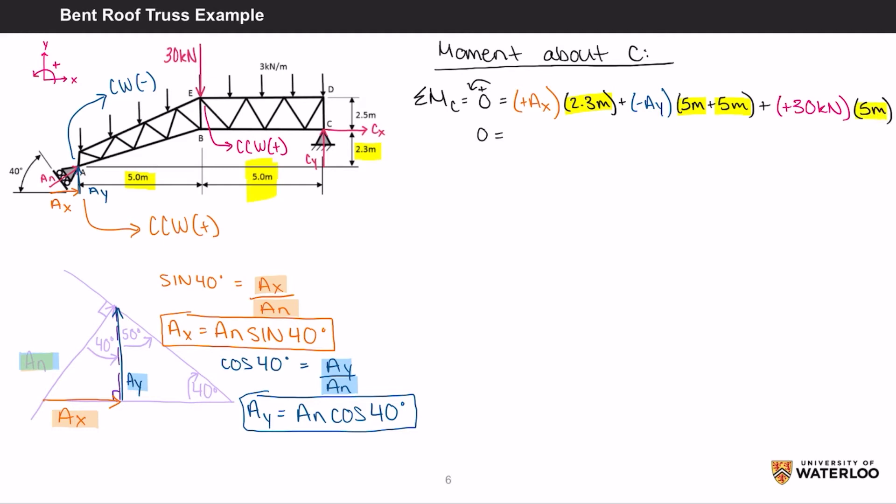You then get zero equals positive AN sine 40 times 2.3 plus negative AN cos 40 times 10 plus 150. If you rearrange the equation, you'll find that AN equals 24.3 kilonewtons.